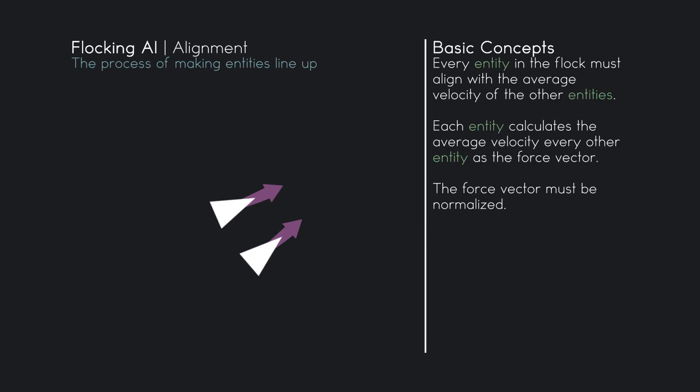So this was probably the easiest steering behavior in the flocking artificial intelligence series. You need to average all the velocity values from all the other entities. To do that you need to sum up all those velocity values and divide by the count of entities. That gives us the average. And then you normalize that vector, and that will influence the current vector that the object is traveling and rotate it to match the other entities.